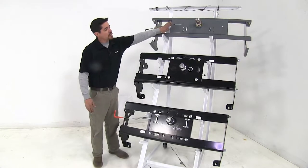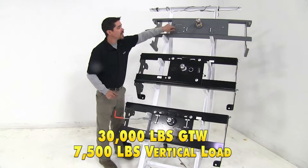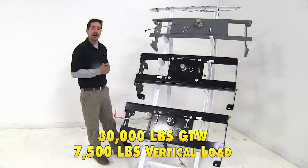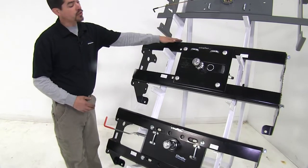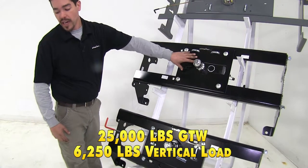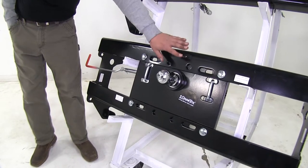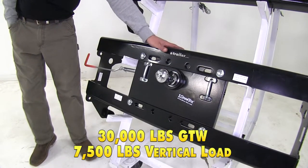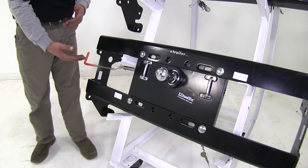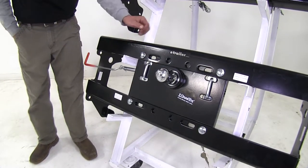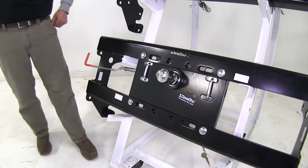Now as far as weight capacity goes, our B&W turnover ball here is going to have a 30,000 pound gross trailer weight rating, and the vertical load limit is going to be 7,500 pounds. Now our draw tight fold down gooseneck is going to have a 25,000 pound gross trailer weight rating, and a 6,250 pound vertical load limit. Finally, our draw tight hide-a-goose here is going to have a 30,000 pound gross trailer weight rating, and a 7,500 pound vertical load limit. Now I do want to mention that all of these weight ratings are for the hitch, and you want to double check with your vehicle's owner's manual to make sure it can handle those capacities.